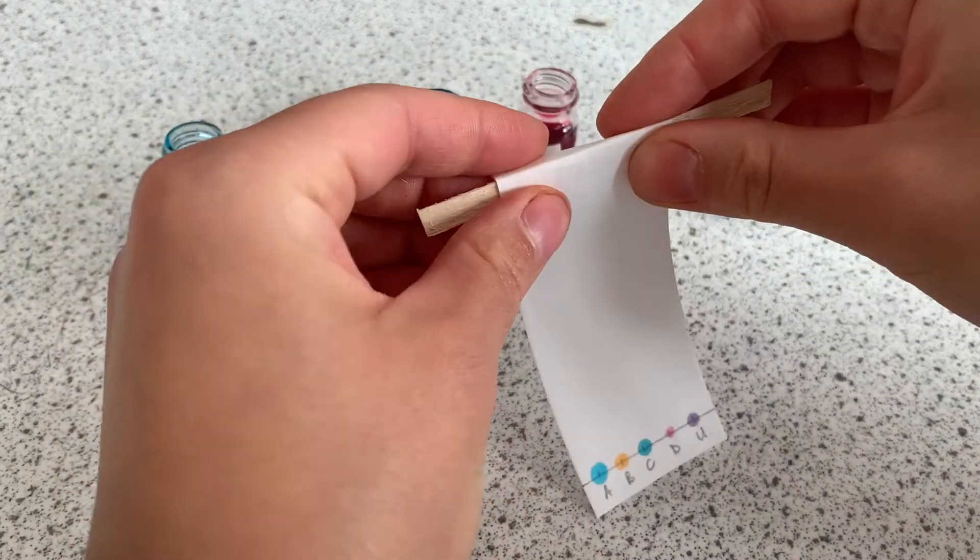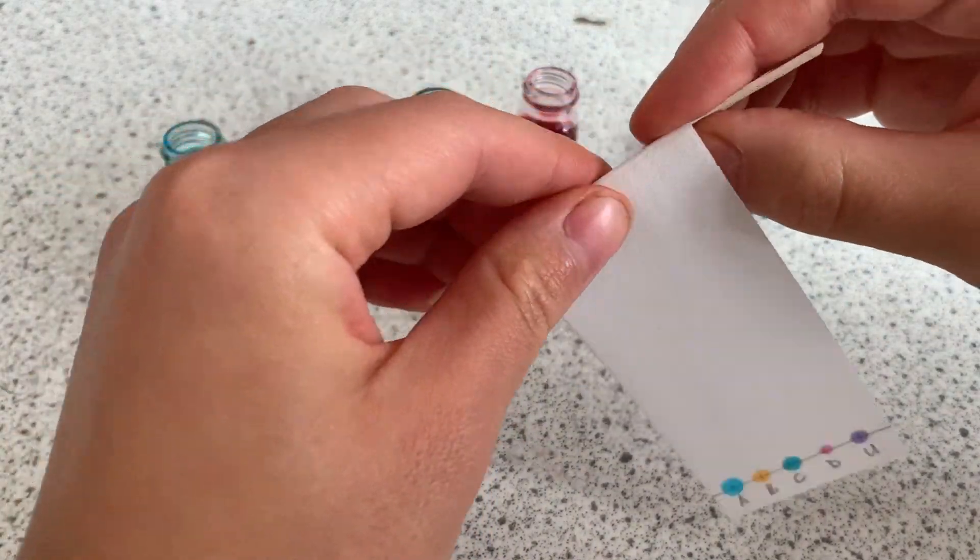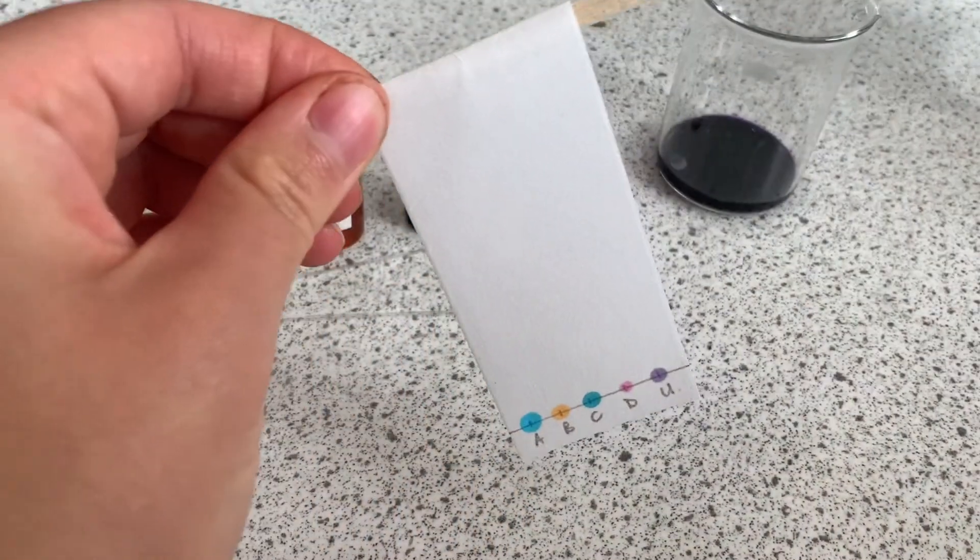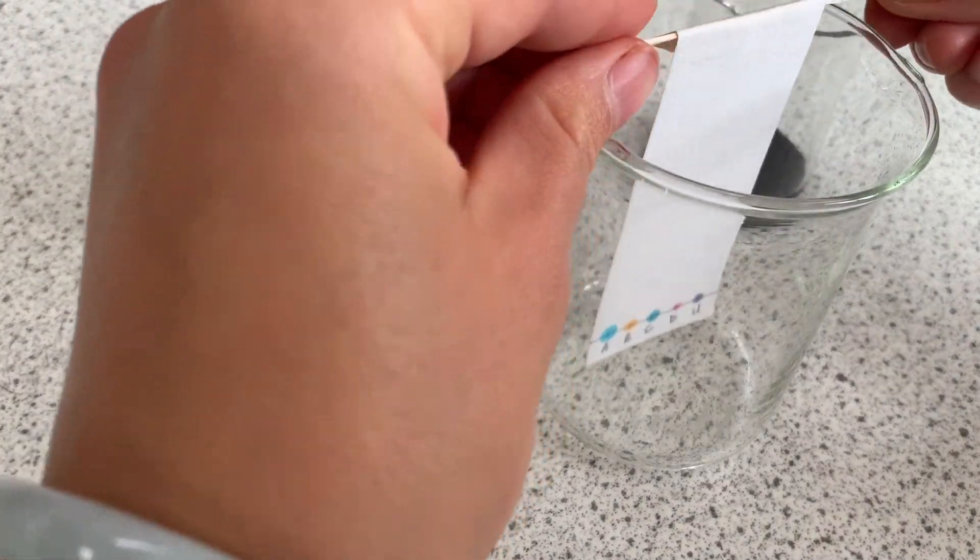When you're done tape or fold the top of your paper over a splint or something similar so that the paper can be suspended into the beaker.